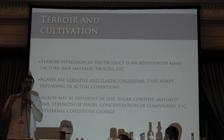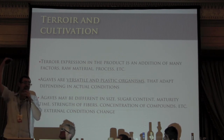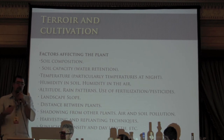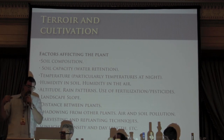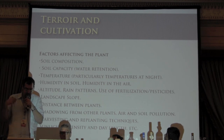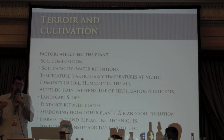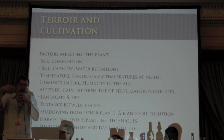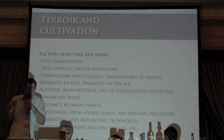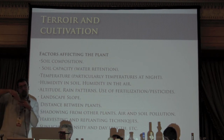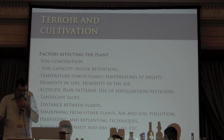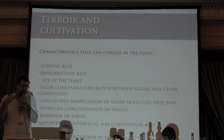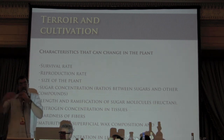Because agaves are so versatile and plastic, putting an agave on a slope or at high altitude with low temperatures will change things. Factors that require the plant to adjust its biochemistry include soil composition, soil water retention capacity, temperature, humidity, rain patterns, fertilization, and the amount of nitrogen — which is very important because during cooking a Maillard reaction occurs, like making bread, where nitrogen and carbon react to create many different flavors. Also relevant are pesticides, landscape slope, distance between plants, shadowing from other plants, and many more factors. The effects include changes in survival rate, reproduction rate, plant size, and sugar concentration.